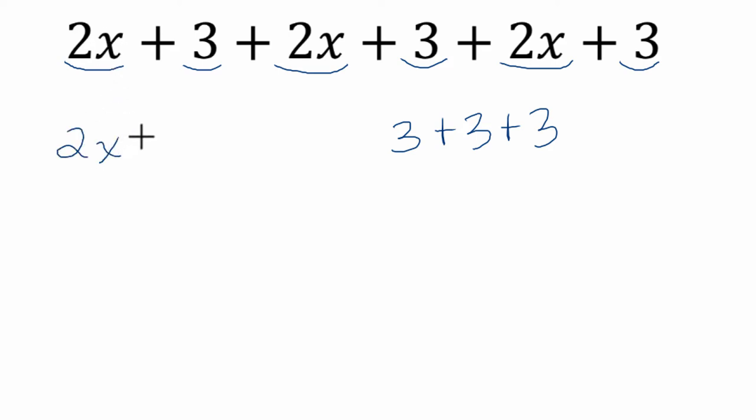We have one group of 2x, another group of 2x's, and then another group of 2x's. We can add those variable terms together. We're going to put a plus between all of this to signify that if we had a value of x, we would be adding.